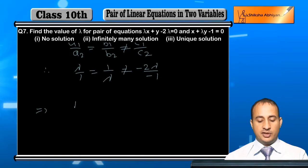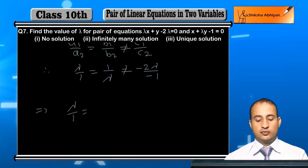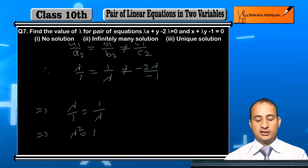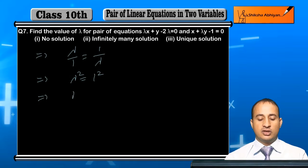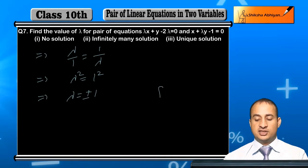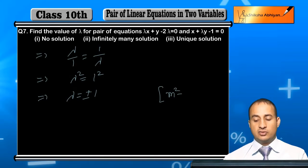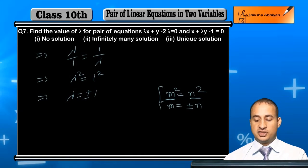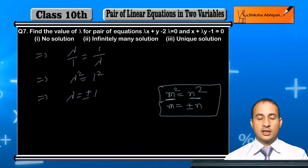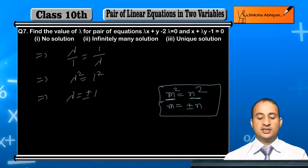From lambda upon 1 equals 1 upon lambda, cross-multiplying gives lambda squared equals 1, therefore lambda equals plus or minus 1. When m squared equals n squared, m equals plus or minus n. So substituting, lambda equals 1.